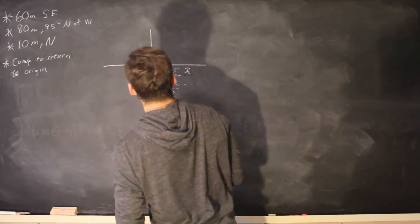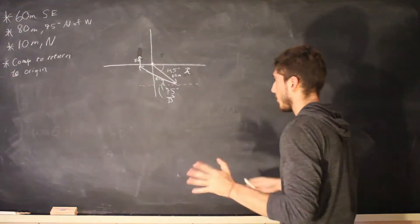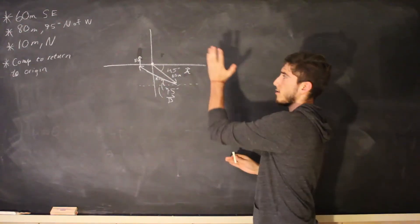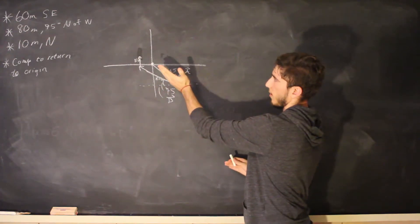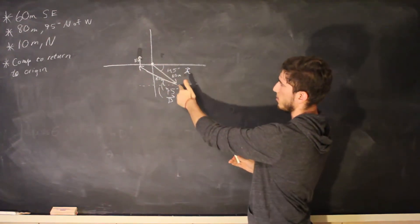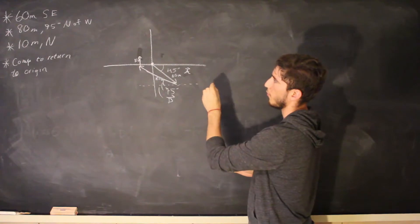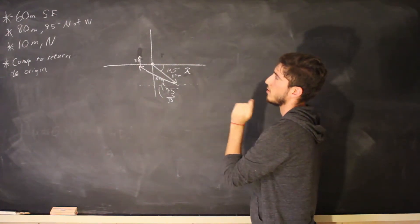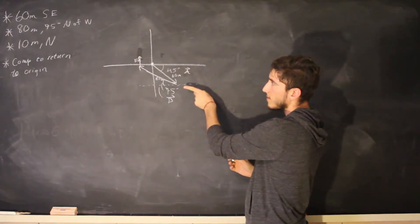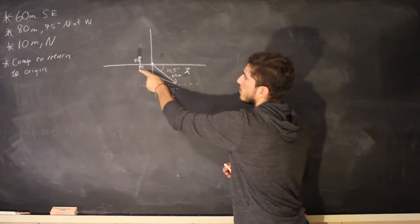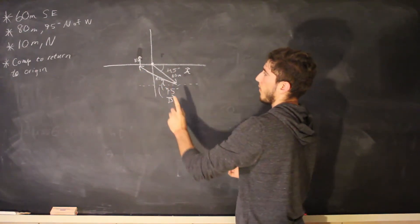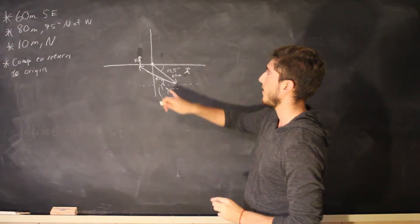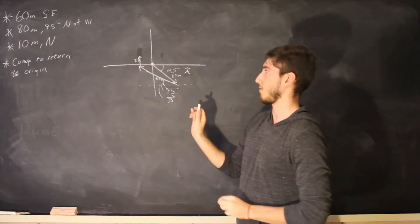and then directly 10 meters north so that's 10 meters directly north okay so let's analyze this real quick so this is the campsite we travel directly south east for 60 meters and then we travel 75 degrees north of west for 80 meters and then we travel 10 degrees directly north and we want to find a vector that will get our friend back to the campsite.